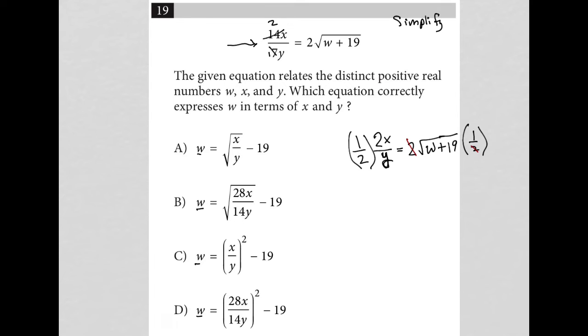And on the left side, I'd be left with 2. Actually, my 2s also cross out there. So I'd be left with just x over y equals radical w plus 19.